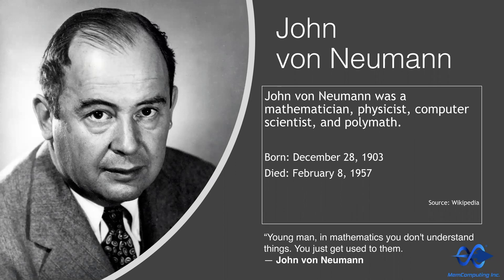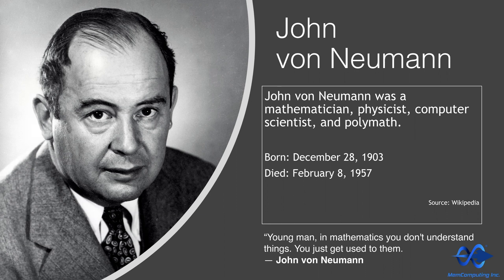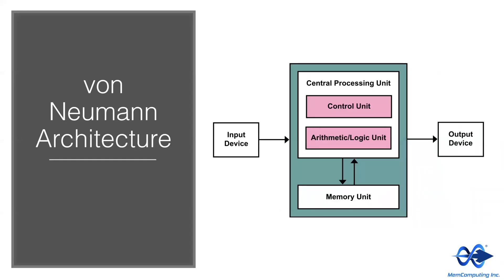John von Neumann was a peer of Alan Turing during the earliest and most influential stages in the development of what became our modern computer. John von Neumann developed a realization of a Turing machine with his von Neumann architecture. What you will notice is that the central processing unit, or CPU, is separate from the memory unit.